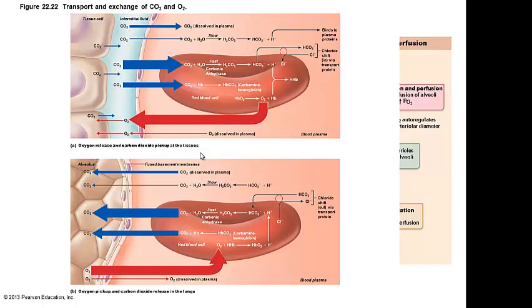This diagram shows us the chemistry with big arrows. Oxygen release and carbon dioxide pickup at the tissues — we already talked about the partial pressure difference. The partial pressure of carbon dioxide is higher in the tissues than in the plasma, so big arrows push more carbon dioxide from the tissues into the blood. When we increase the amount of carbon dioxide, that chemical reaction — CO2 plus water — is going to create carbonic acid.